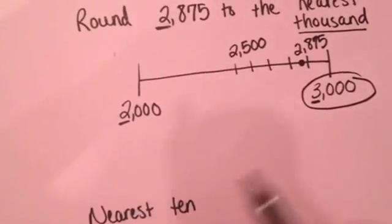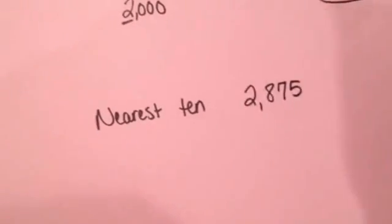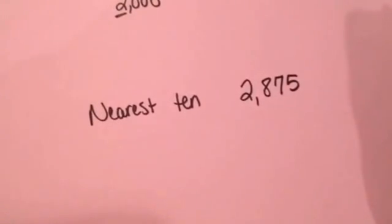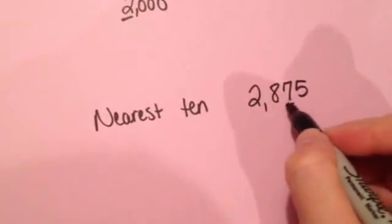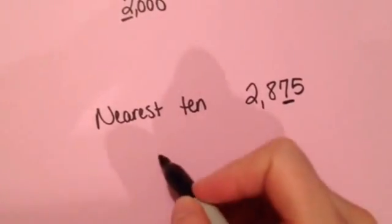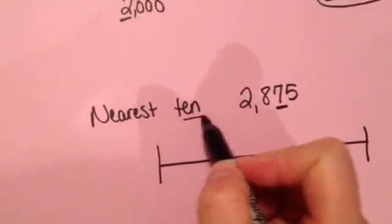Let's talk about that same number rounded to the nearest ten. Again, we're dealing with $2,875. So I'm going to underline the number that's in the tens place. So I know this is the ones place, that's the tens place. So when I draw my number line, because this is telling me to the nearest ten, I need to jump ten.